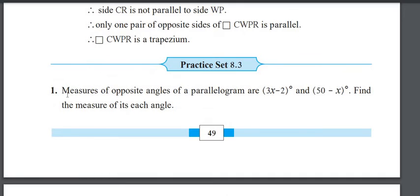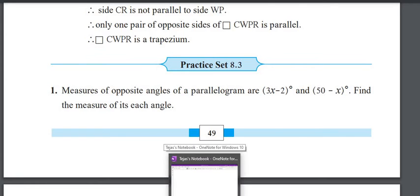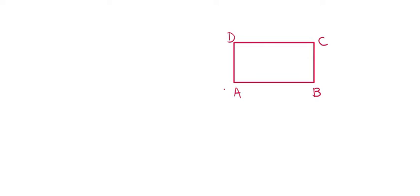Now see Practice Set 8.3, first question. Measures of opposite angles of a parallelogram are 3X minus 2 degrees and 50 minus X degrees. Find the measure of each angle. First, what is given? Opposite angles of a parallelogram are given. I draw a parallelogram and name it ABCD.